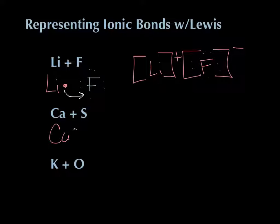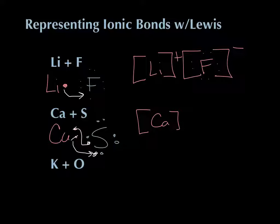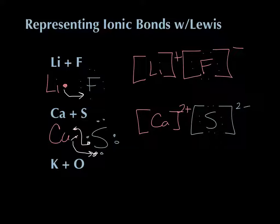Your turn: draw Lewis dots for calcium and sulfur and show how they bond together. Calcium has two dots, sulfur has six — one, two, three, four, five, six. Calcium is going to give away two electrons and sulfur is going to gain two: calcium becomes Ca²⁺, and sulfur becomes sulfide with all eight dots and a 2⁻ charge. That's a perfect match.